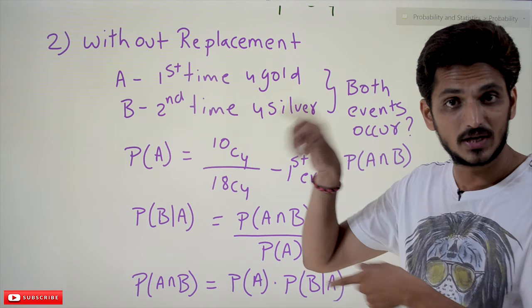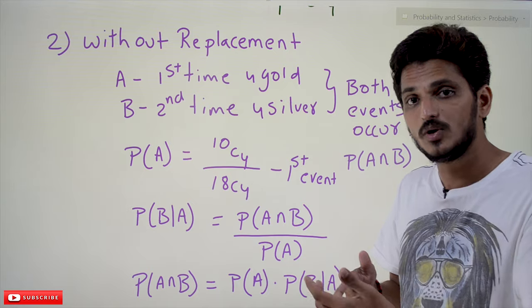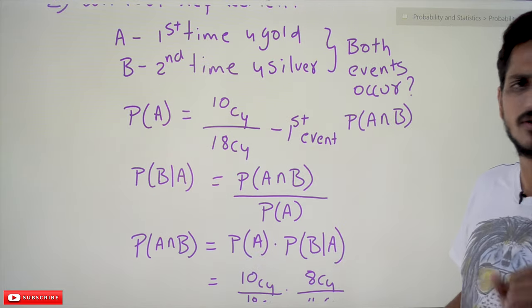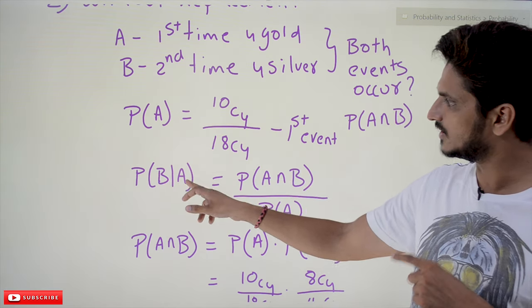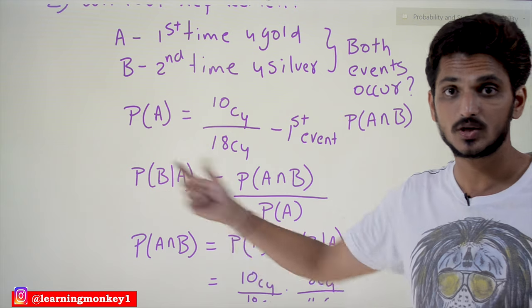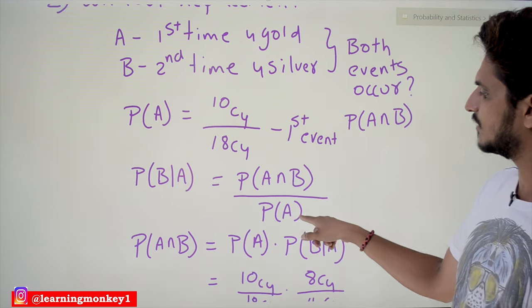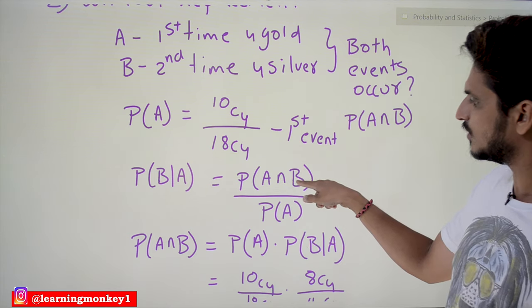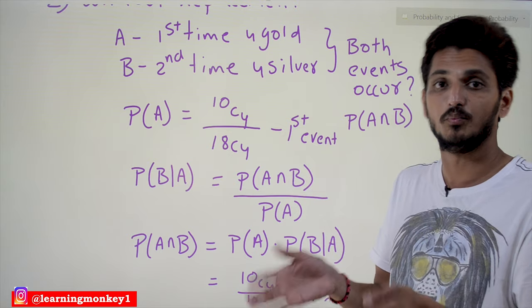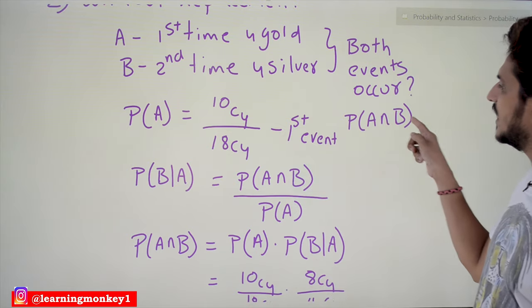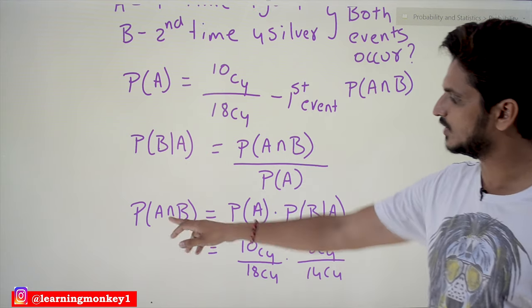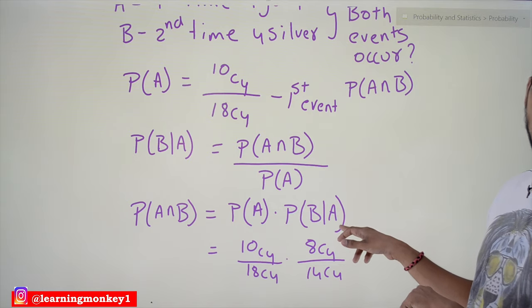For dependent events we have to use conditional probability. When we discussed dependent events we said we would use conditional probability — this is that example. We already know the equation: probability of B given A, where A is the first time and B is the second time. Probability of B given A equals probability of A intersection B divided by probability of A. So what we need to identify is probability of A intersection B, meaning both A and B have to happen.